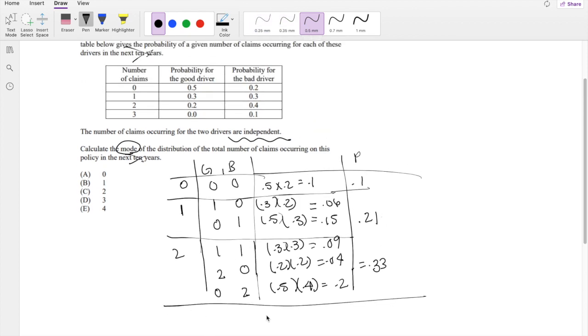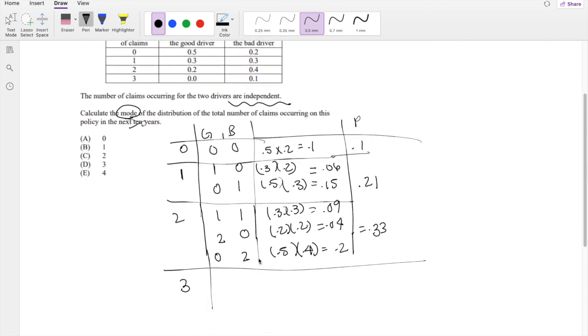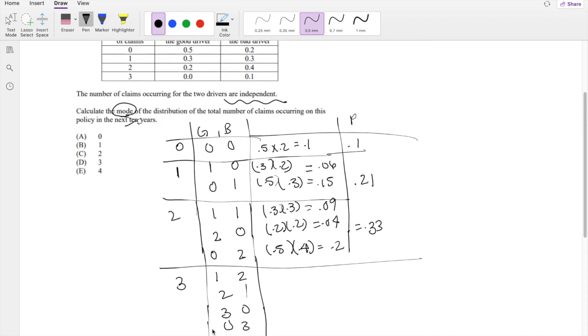Okay, and then for the third one, when can you have 3 claims? That can happen when good driver has 1 and bad driver has 2, or good driver has 2 and bad driver has 1.